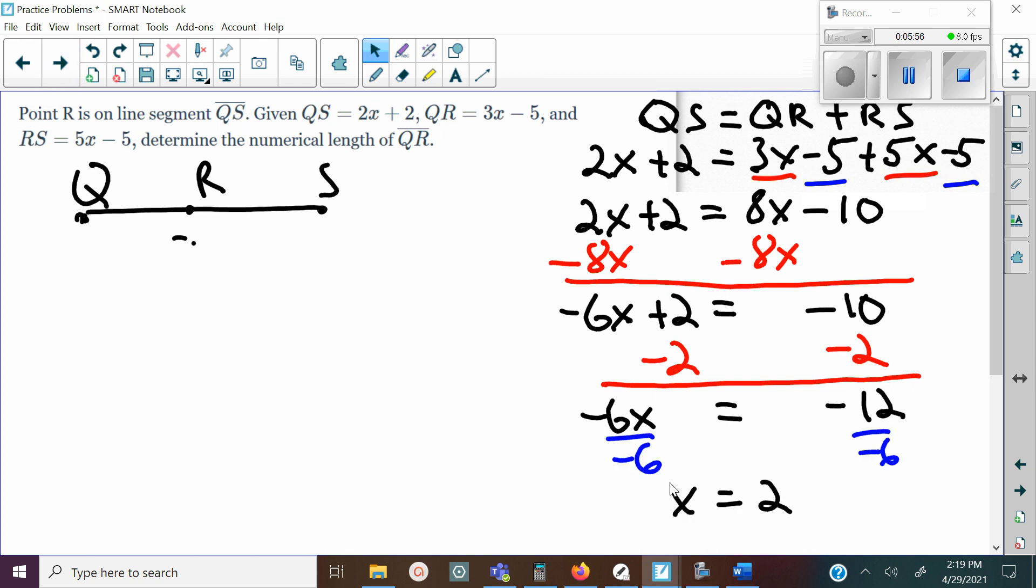Then I'm going to divide by -6. Negative divided by negative is a positive. 12 divided by 6 is 2, so now I have x = 2. And now my last step is just to plug this 2 in for what I'm looking for. In this case, I'm looking for QR, so make sure you plug it into the right expression.